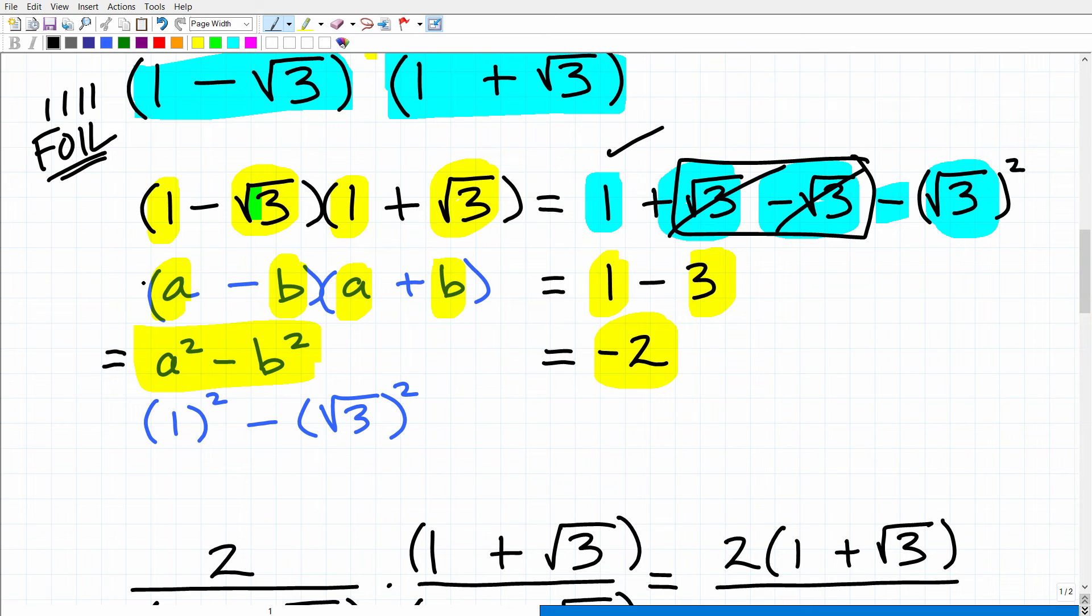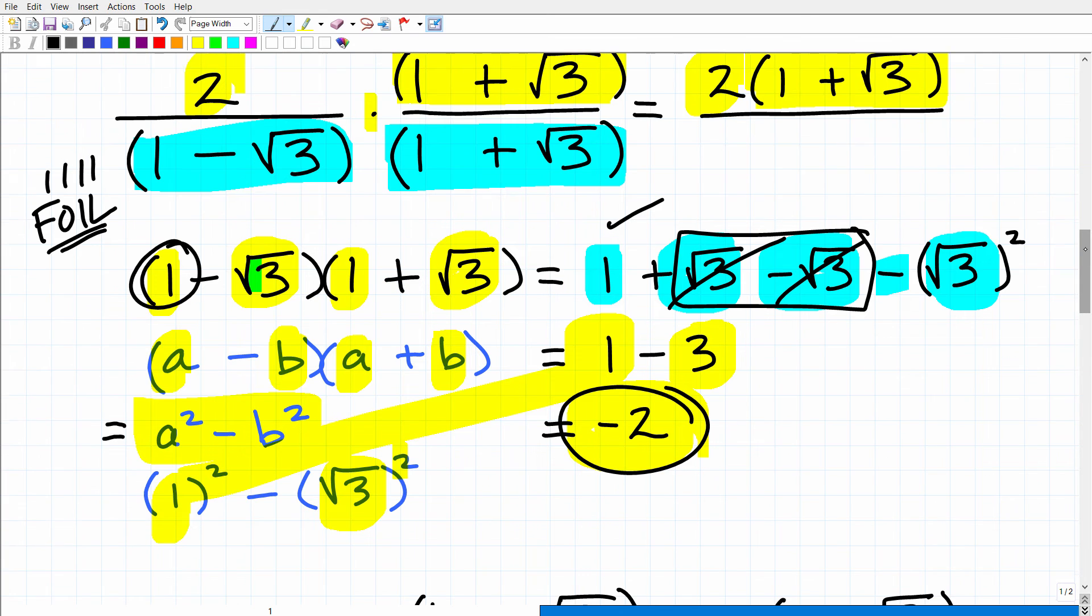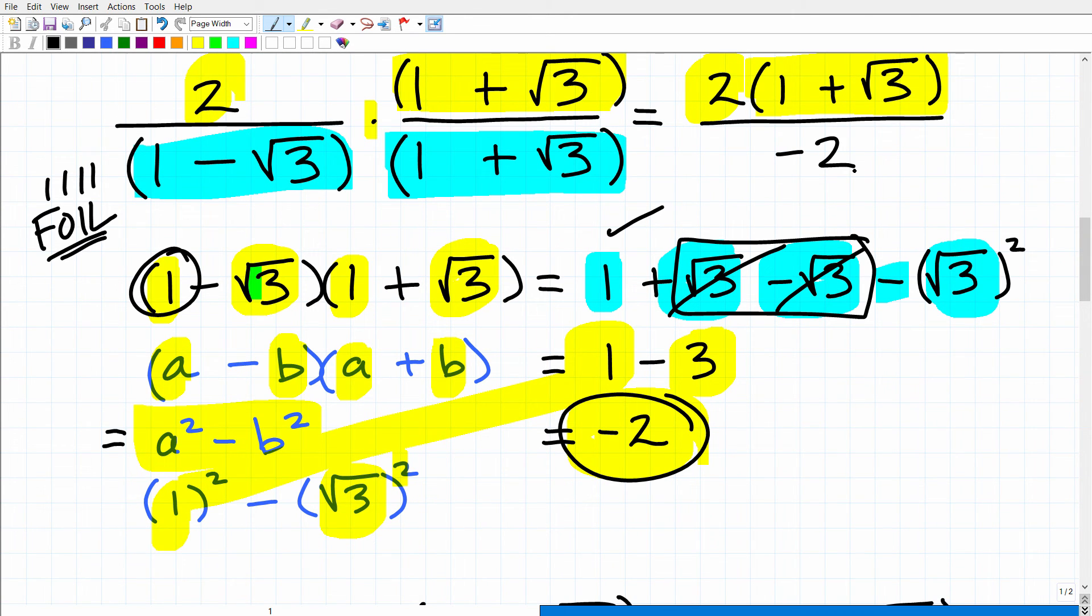So when you have a product in the form of a minus b times a plus b, you can find that product by going a squared minus b squared. So in this case, a is 1. So a squared would be 1 squared, and then b is our square root of 3. So b squared would be square root of 3 squared. You can see 1 squared is the same thing as 1, and the square root of 3 squared is the same thing as 3. So we end up with the same answer, negative 2. That is going to be our denominator.